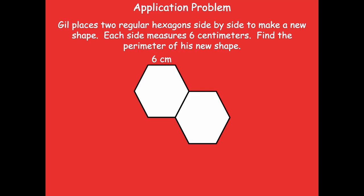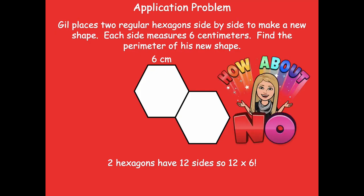Two hexagons have 12 sides, so 12 times 6 would seem to be the way to solve this problem — but no. Why no? Because the part where these two sides touch each other, we don't measure those as part of our perimeter. So when we combine those two hexagons, we lose two of the sides.